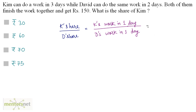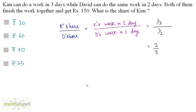Kim can do the work in 3 days, so in 1 day Kim's work will be 1/3. Similarly, in 1 day David's work will be 1/2. So the ratio of Kim's share to David's share is 2:3.